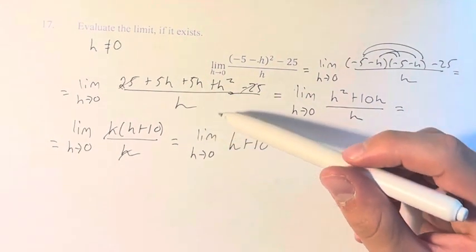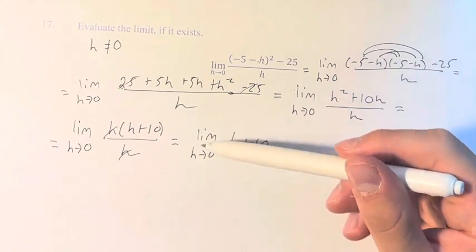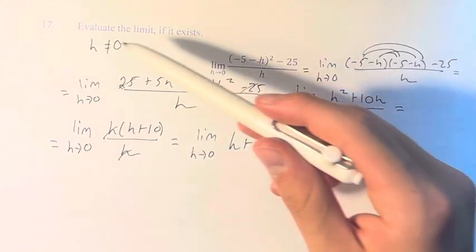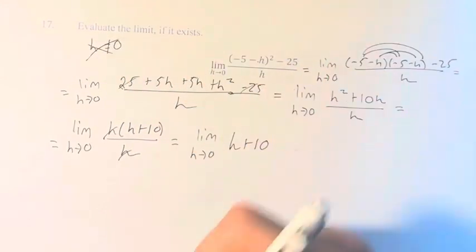The reason we don't have to worry about that here is because we're looking at the limit, which is the behavior of the function as it approaches 0, not it actually being at 0, meaning we don't really have to care about this.